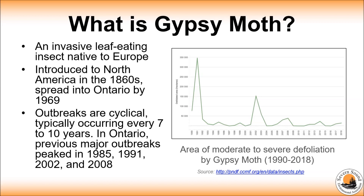Their population surges about every seven to ten years and when it rises rapidly it is typically followed by a crash through a combination of competition and mortality from natural factors such as predators and disease.